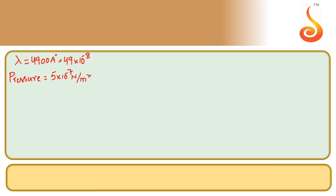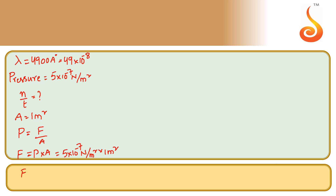We need to calculate the number of photons per second. Since the area is mentioned as unit, area is 1 meter square. Therefore, force equals pressure into area: 5 × 10⁻⁷ newton per meter square × 1 meter square gives force equal to 5 × 10⁻⁷ newton. This is the force exerted by the radiation on the metal plate.